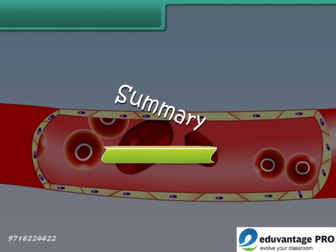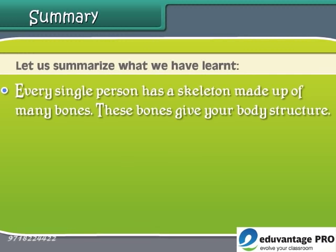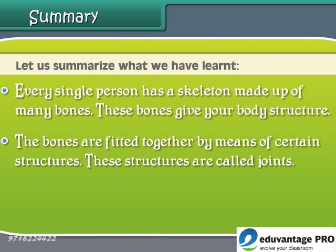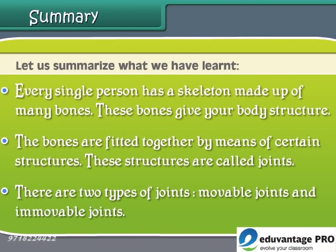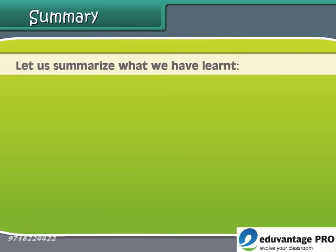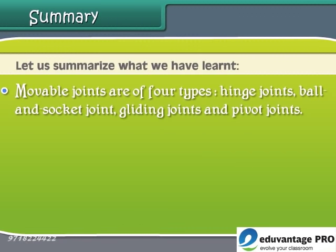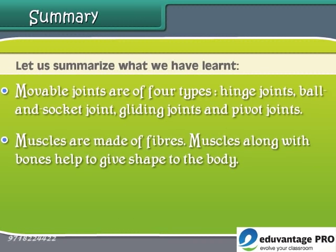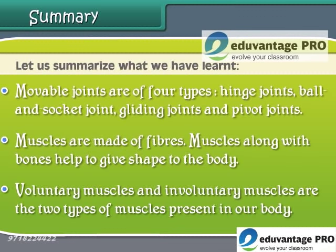Summary: Every single person has a skeleton made up of many bones — these bones give our body structure. The bones are fitted together by means of certain structures called joints. There are two types of joints: moveable and immovable. Moveable joints are of four types: hinge joints, ball and socket joints, gliding joints, and pivot joints. Muscles are made of fibers and along with bones help to give shape to the body. Voluntary muscles and involuntary muscles are the two types of muscles present in our body.